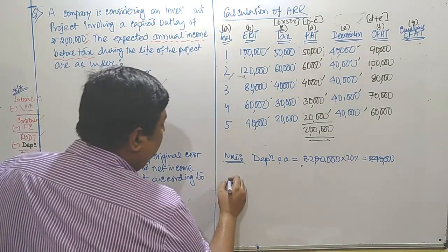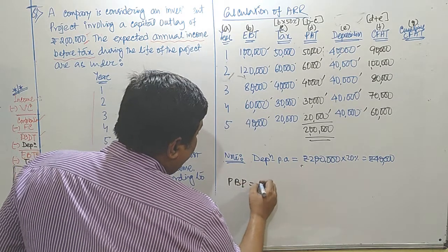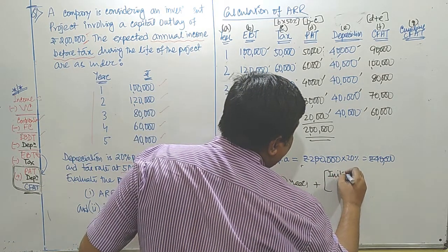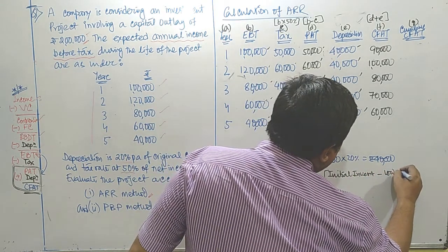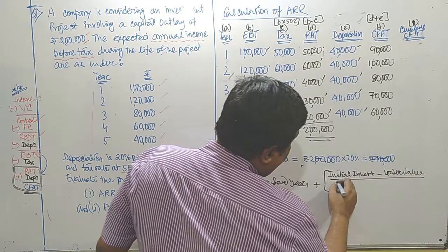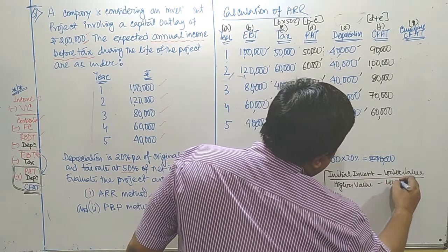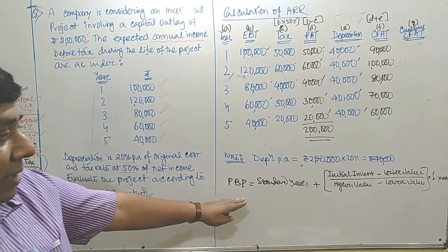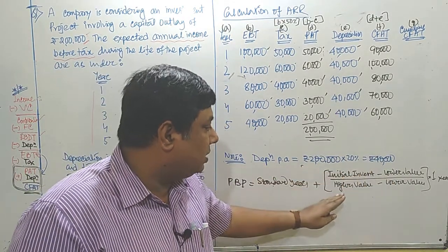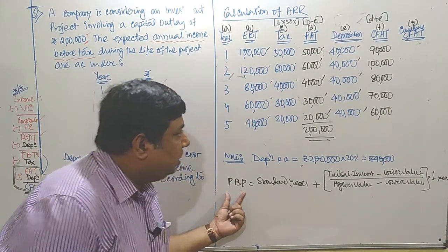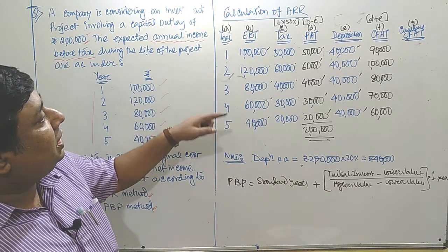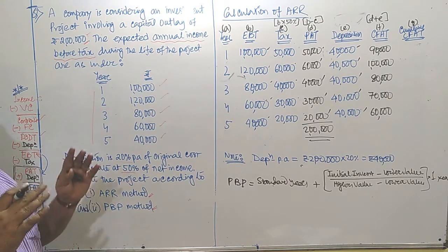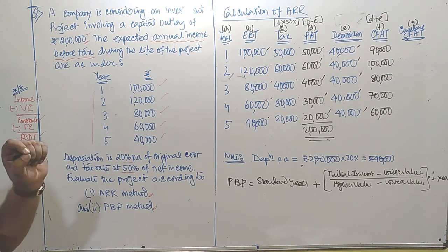According to the formula of PBP, the formula is: standard year plus (initial investment minus lower value) divided by (higher value minus lower value) into 1 year. The question is: what is standard year, what is initial investment, what is lower value, what is higher value? The project may give total return more than 2 lakhs, but we want to calculate by what time we get back exactly 2 lakh rupees — the initial investment.